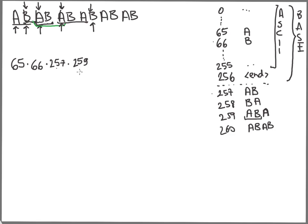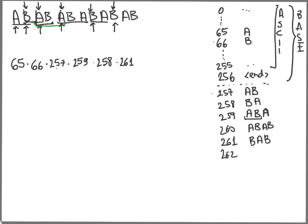We still need to emit something starting with B. We find BAB — which is entry 261 — and emit it. We don't add entry 262 because we have reached the end of the string, so there is nothing more to add. At this point we send the end marker, 256. That is how the encoding works.